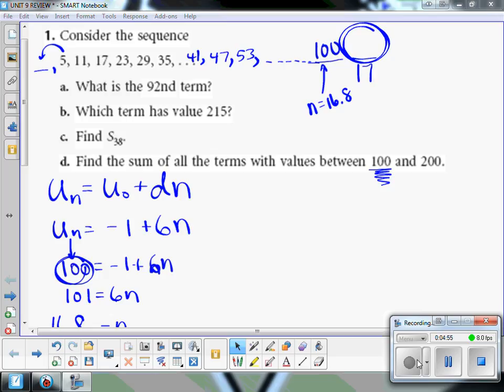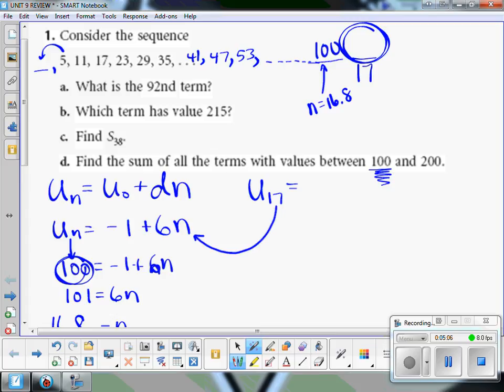So you would find the 17th term by plugging 17 into this formula, and you get 101. 101 is the 17th term. It's the first number bigger than 100.